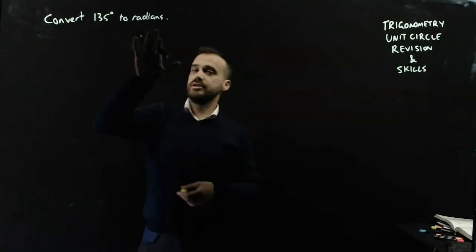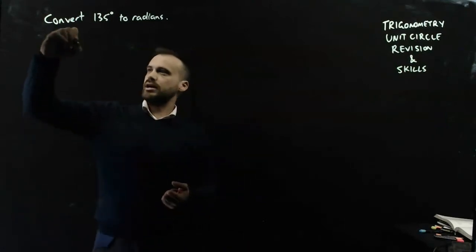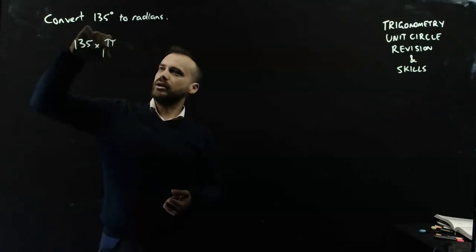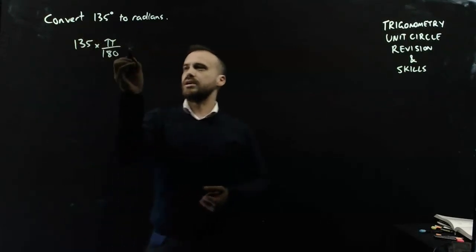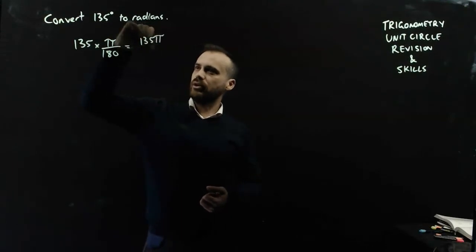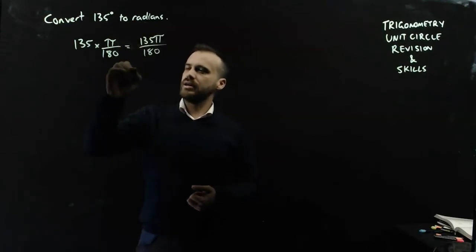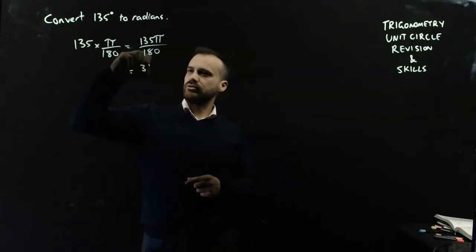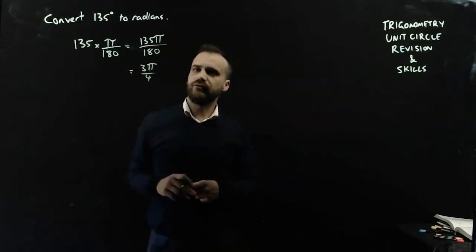So this one I'm going to convert degrees to radians. To do that, it's going to be taking the degrees and multiplying it by π on 180. When I do that, I'll get 135π on 180, and you can simplify that to 3π on 4.